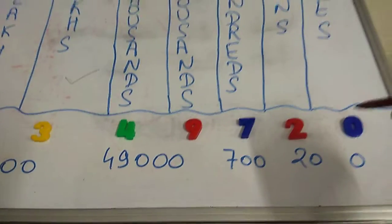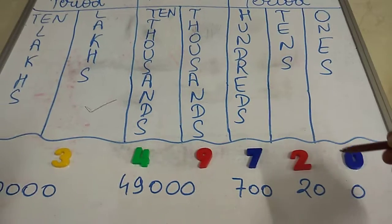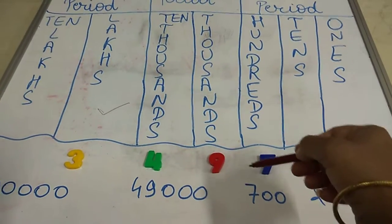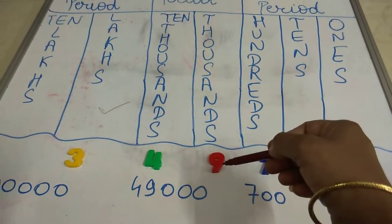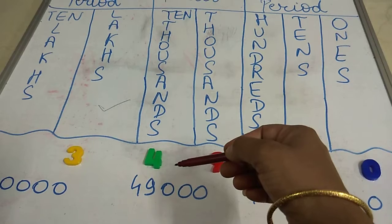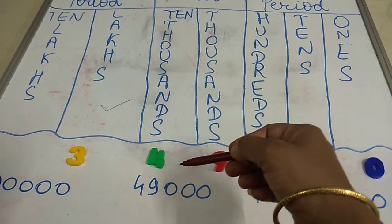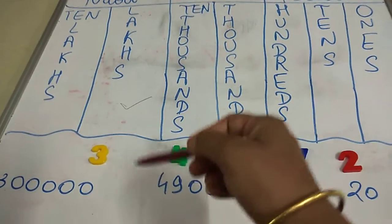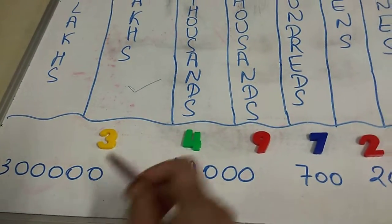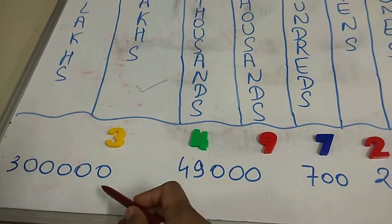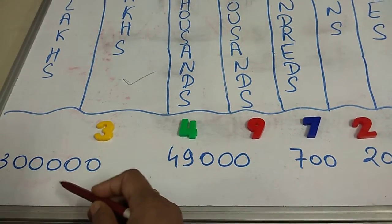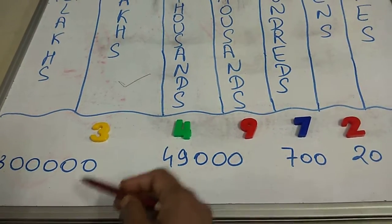So if I write here: 0 at the ones place, 2 at the tens place, 7 at the hundreds place, 9 at the thousands place, 4 at the ten thousands place, and 3 at the lakhs place. What will be their place values? Three lakh — after three, how many zeros are there?